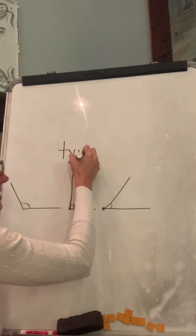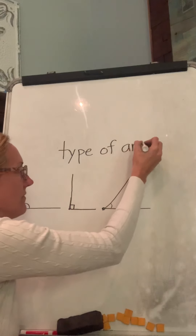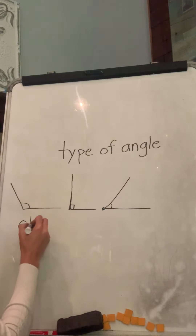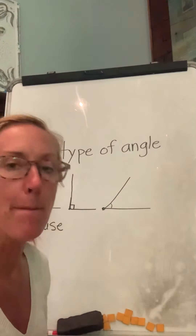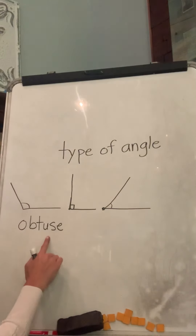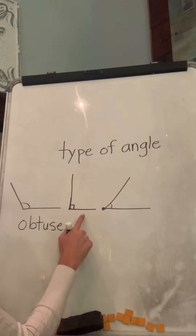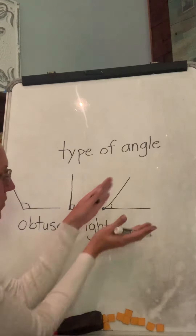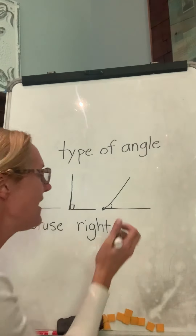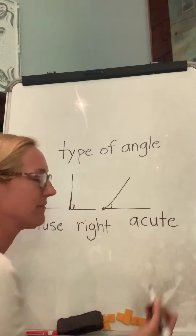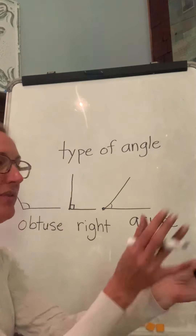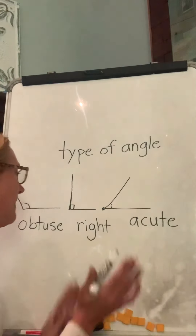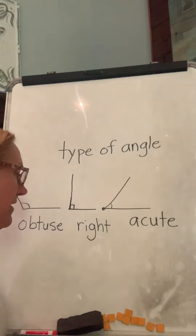If it's really wide open, we call it obtuse. Everybody say obtuse — it's kind of fun to say! So this one is obtuse, a nice big wide open angle. This one is called a right angle. And if it's pretty small — think about small little animals, they're so cute — it's an acute angle. If you become an architect you'll refer to these as acute, right, or obtuse angles.